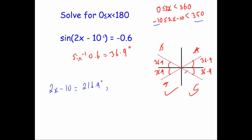Then we've got our next solution. We go on around and check it's going to be less than 350. So it's 360 minus 36.9, which gives 323.1 degrees. That will be another solution. We go around to 350 and stop, so we've got our two solutions.